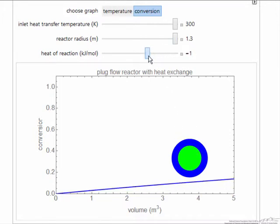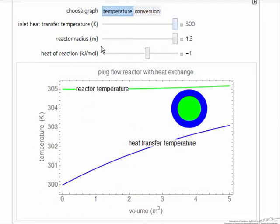If I make it less endothermic, or alternatively, I would need a higher inlet temperature for significant reaction to take place for this endothermic reaction. The idea is, hopefully this simulation gives you a better feeling for how reactor behavior changes with the heat of reaction and the radius of the reactor.